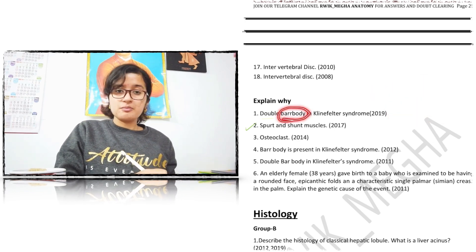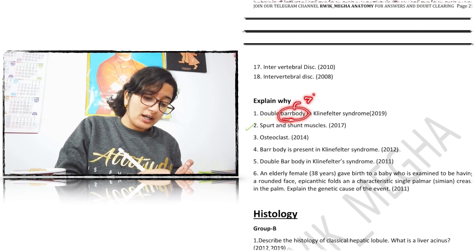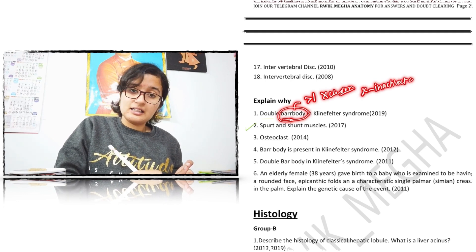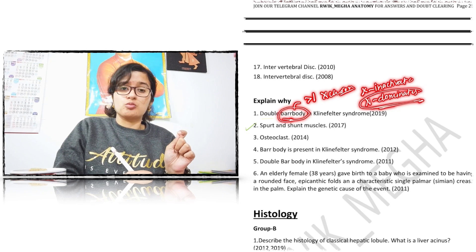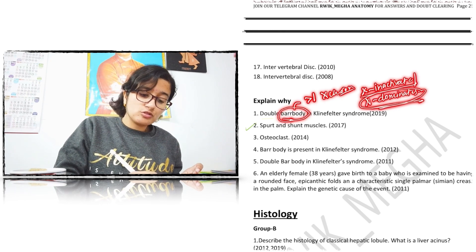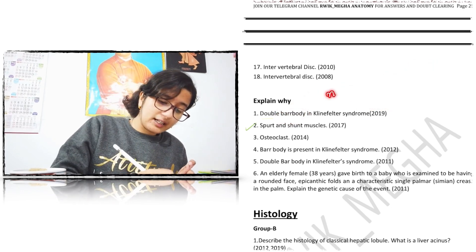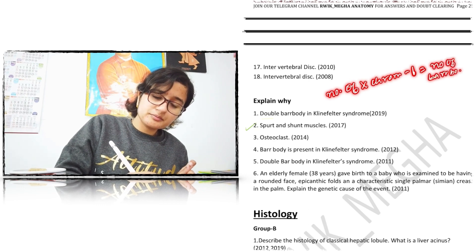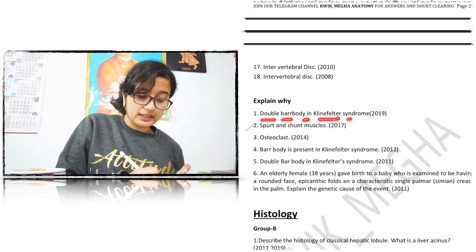Now, what is a Barr body? When a set of chromosomes has more than one X chromosome, one of the X chromosomes becomes inactivated and the other X chromosome dominates. All the features are due to that dominating X chromosome. This inactivated X chromosome is called the Barr body. The number of Barr bodies can be calculated as: number of X chromosomes minus one equals number of Barr bodies.